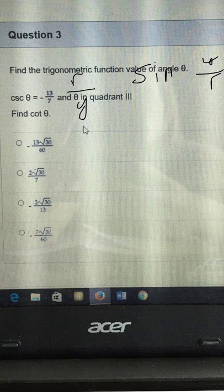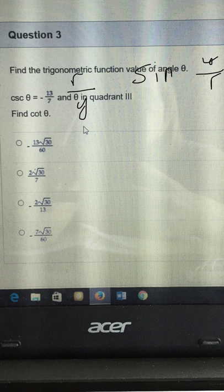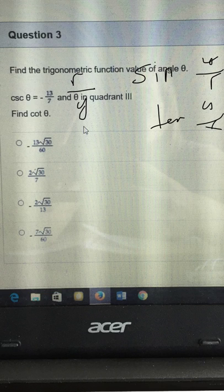So that means y must be negative. Then they want to know what cotangent is, which is the reciprocal of tangent. Tangent is y over x, so what they're looking for is cotangent, which is the reciprocal of that: x over y.